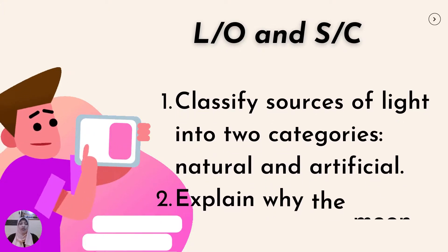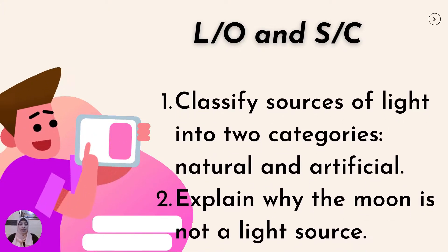We start with our learning objective and our success criteria. You should be able at the end of the class today to classify sources of light into two categories — natural and artificial — and to explain why the moon is not a source of light.